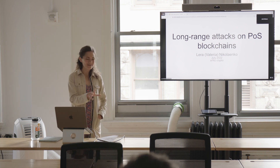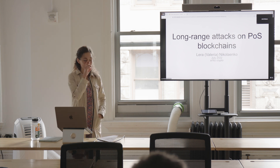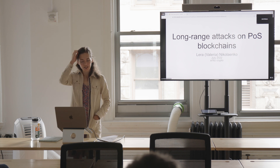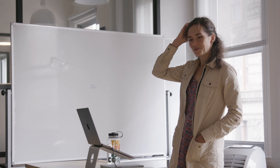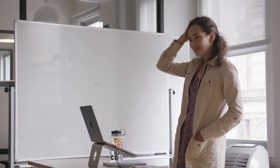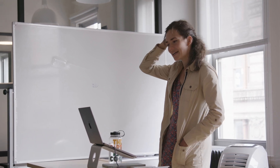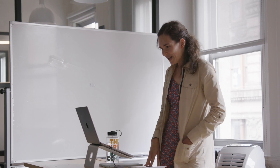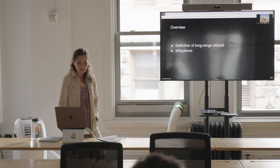Today we're going to deep dive into one particular attack on proof-of-stake blockchains that's not possible in proof-of-work blockchains. In my view, it's the hardest attack to combat. There are different approaches and we'll see different trade-offs that they offer. Maybe if there's time at the end we can brainstorm other ideas of how this can be mitigated. We'll start with the definition of the long-range attack, and then discuss different mitigation approaches.